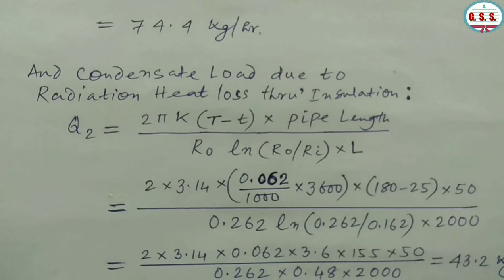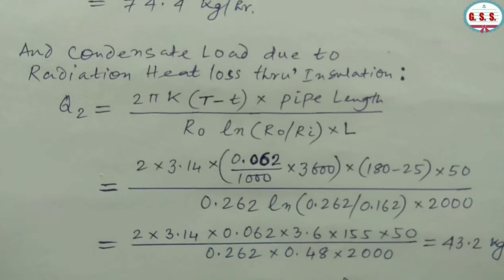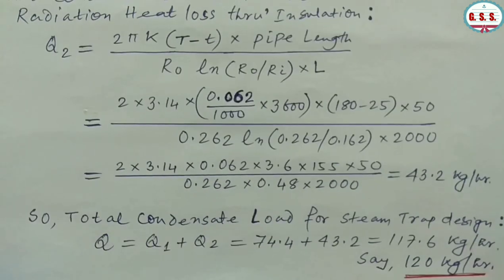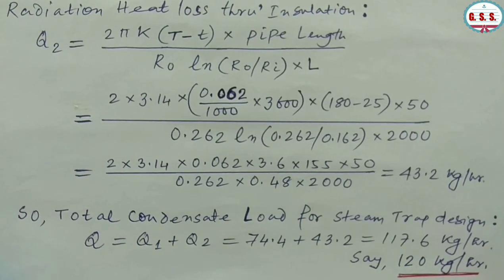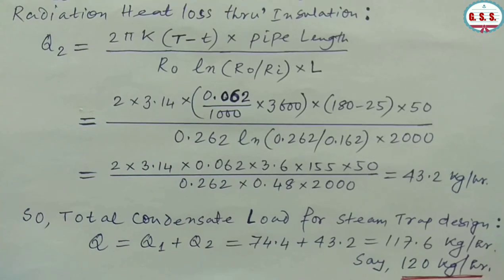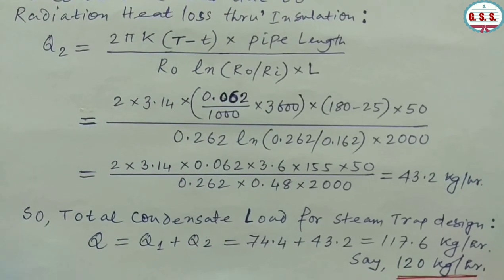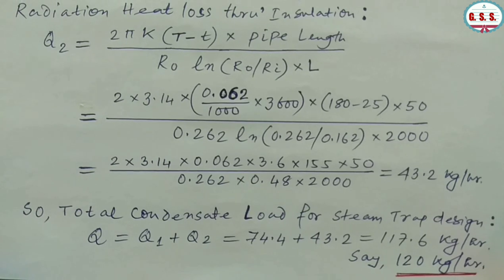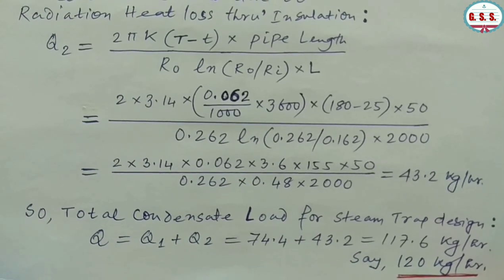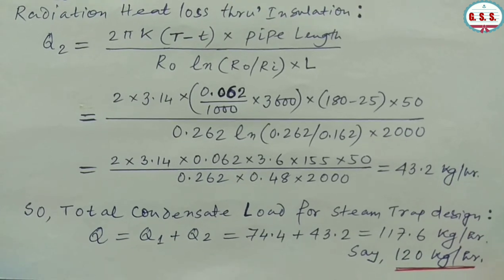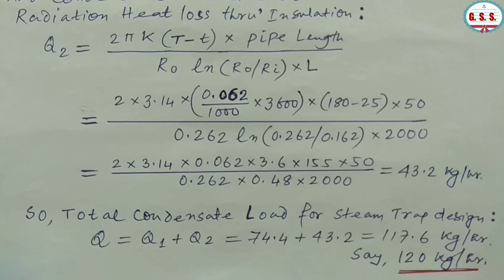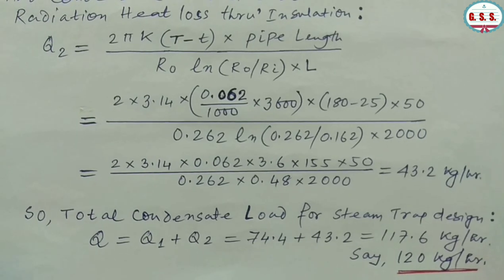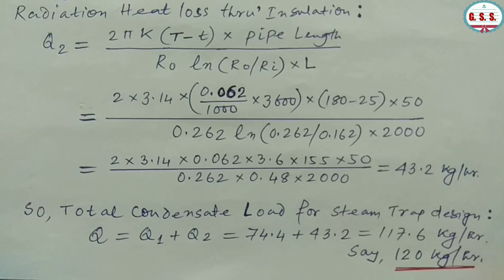Condensate load due to radiation heat loss through insulation: Q2 = 2π × K × (T − t) × pipe length / (R0 × ln(R0/Ri) × L) = (2 × 3.14 × (0.062/1000) × 3600 × (180 − 25) × 50) / (0.262 × ln(0.262/0.162) × 2000) = 43.2 kg/hr. So total condensate load for steam trap design = Q1 + Q2 = 74.4 + 43.2 = 117.6 kg/hr.